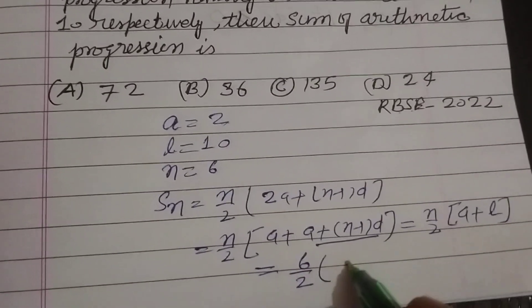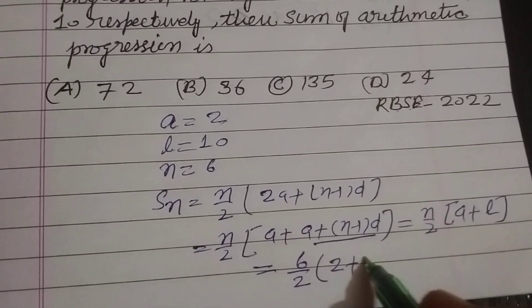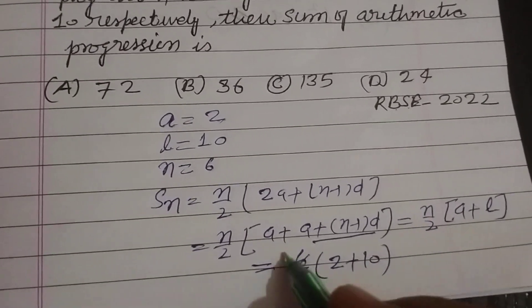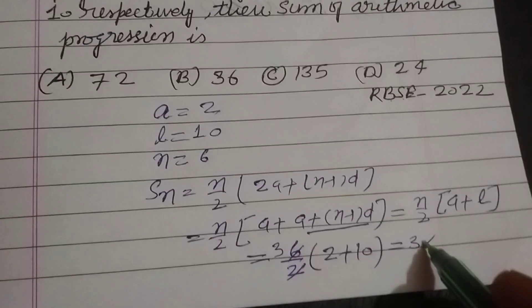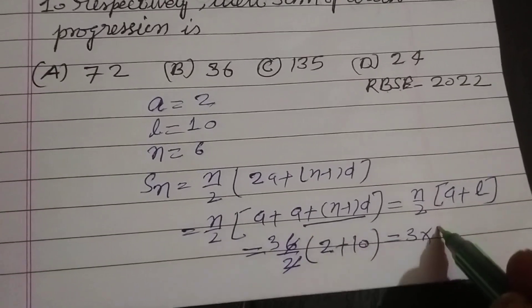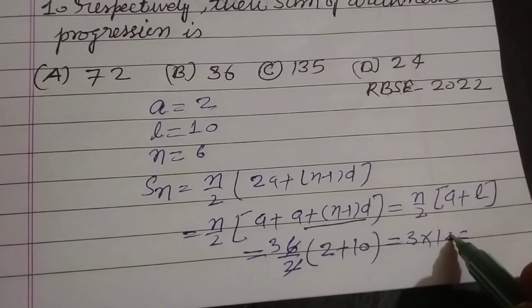n is given 6, 6 by 2, a is given 2 and l is 10. So 6 by 2 is 3. This is 3 into 12, 10 plus 2 is 12. 3 into 12 is 36.